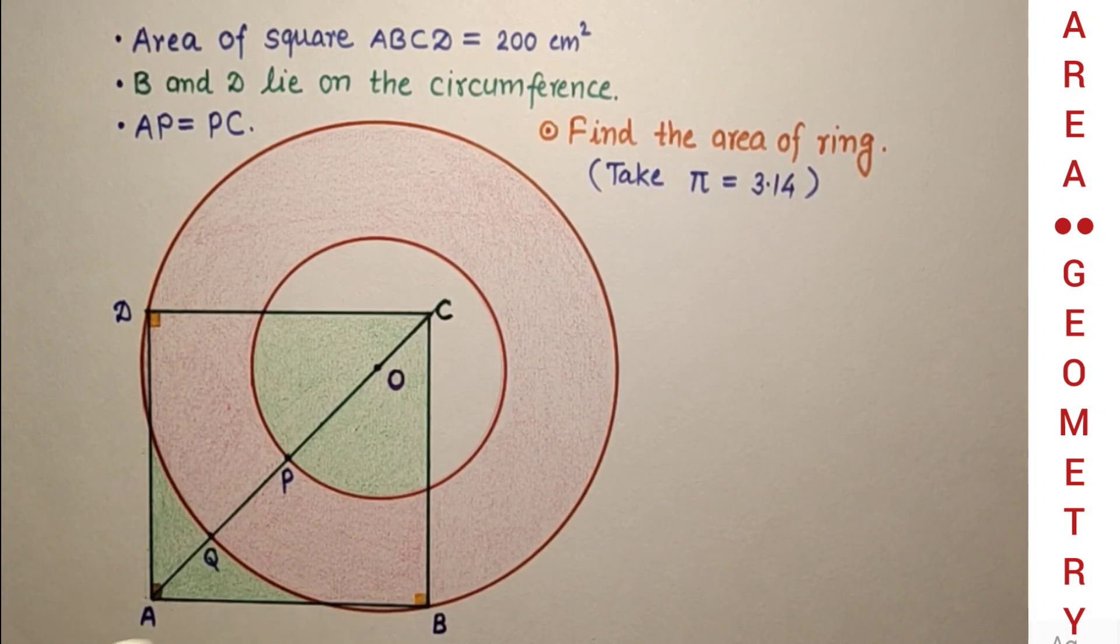ABCD is a square whose area is 200 cm². Vertices B and D lie on the bigger circle's circumference. P is the midpoint of diagonal AC. Now we have to find the area of this ring, the pink shaded area. We have to take the value of π as 3.14.